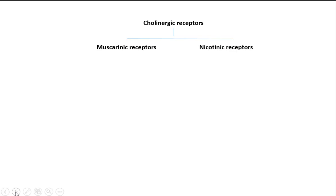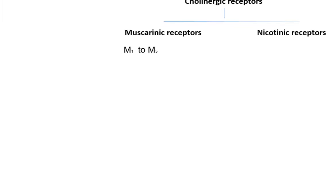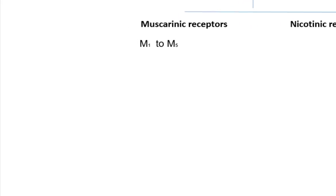Muscarinic receptors are found in smooth muscle, cardiac tissue, and glands at parasympathetic neuroeffector junctions. Muscarinic receptors are divided into five subtypes, M1 through M5, based on their pharmacologic properties and molecular structures. The principal subtypes found in most tissues are M1, M2, and M3 receptors.